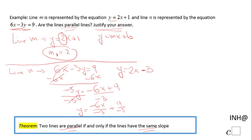So we notice the slope of line N, which I'm going to call M2 or M sub 2, is also 2.